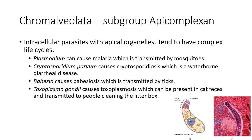Cryptosporidium parvum causes diarrhea. You tend to see that in Texas in the summertime when people start going into rivers and lakes. You can also get it from pools, so make sure that if your child is not potty trained, you don't take them to pools where they might contaminate the water and give Crypto to other people.